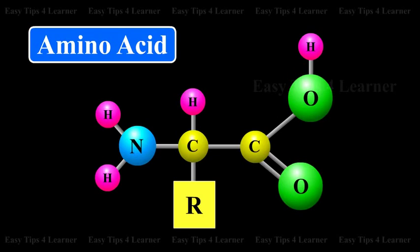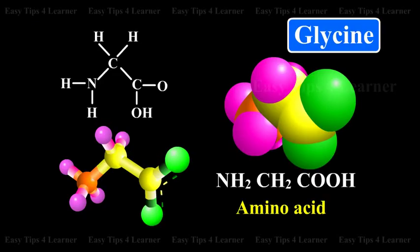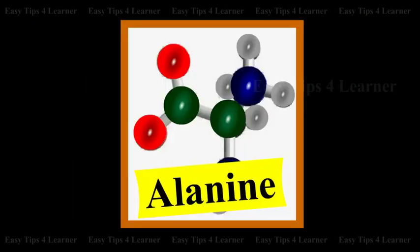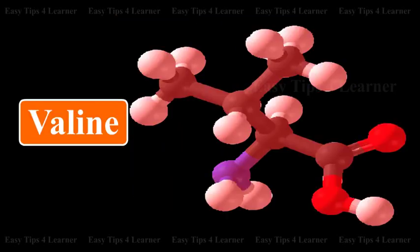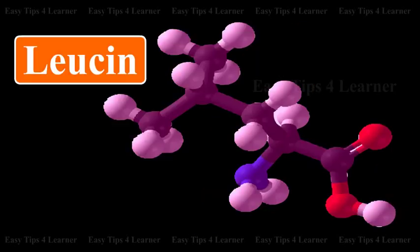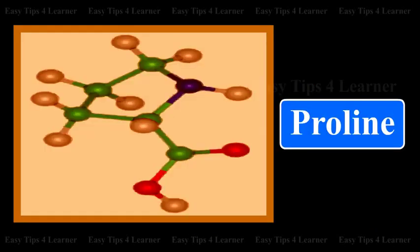The building blocks of proteins are amino acids. There are approximately 20 different types of amino acids, such as glycine, alanine, serine, valine, leucine, proline, etc.